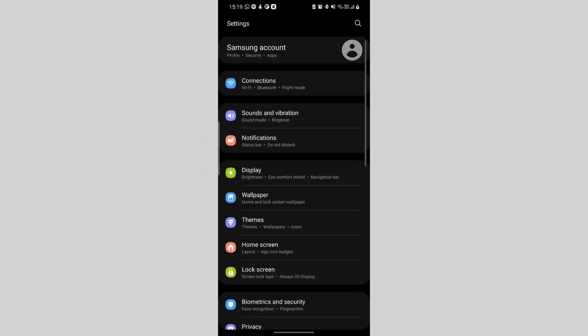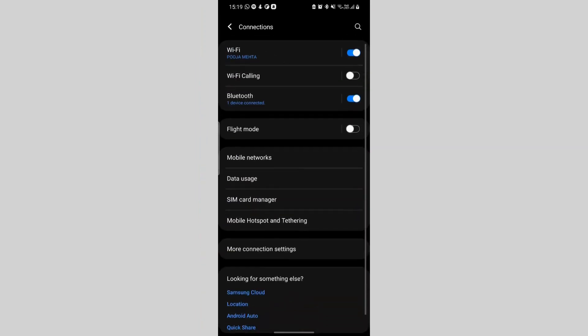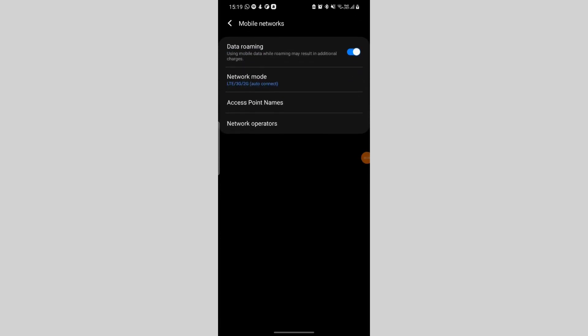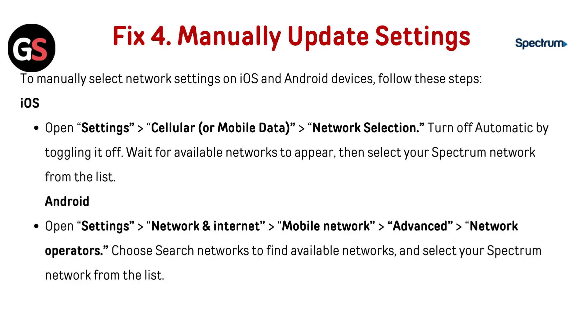For Android: Open Settings, go to Network and Internet, then Mobile Network, then Advanced, then Network Operators. Choose Search Networks to find available networks and select your Spectrum network from the list.